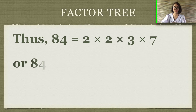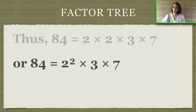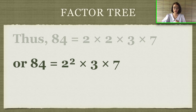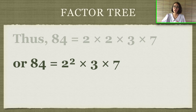Or in exponential form, 84 equals 2 squared times 3 times 7. That is the way of using the factor tree. Now we can use a different method if you have difficulty with the factor tree.